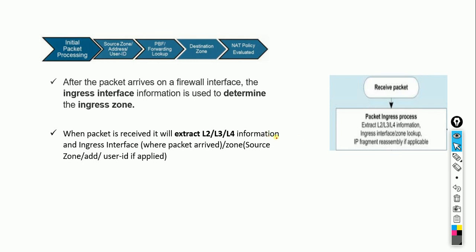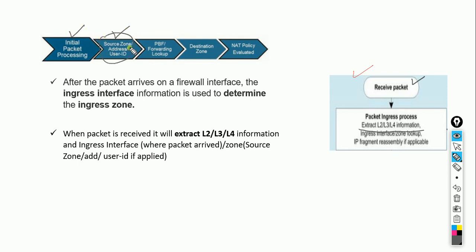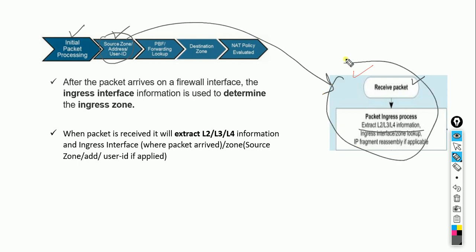Here I have compared the brief diagram with the detailed diagram. This is the first step of our detailed diagram — the packet is received and layer 2, layer 3, and layer 4 information is extracted. This initial packet processing is mapped here in the detailed diagram.